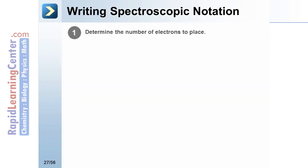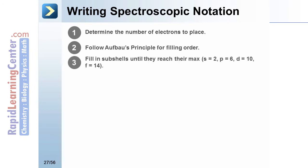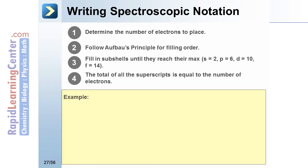To write spectroscopic notation, determine the number of electrons. Follow the Aufbau principle. Fill in the subshells until they reach their max: 2 for an s, 6 for a p, 10 for a d, or 14 for an f. The total of all the superscripts is equal to the total number of electrons in the atom.